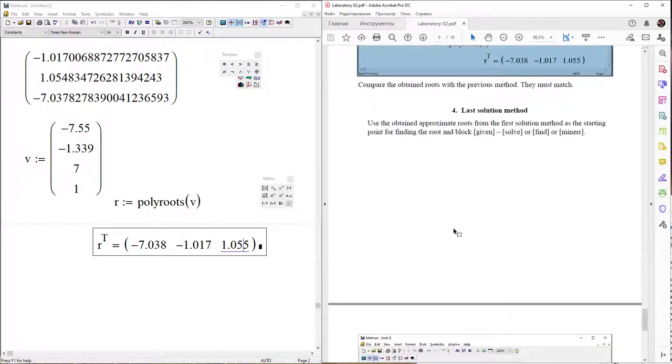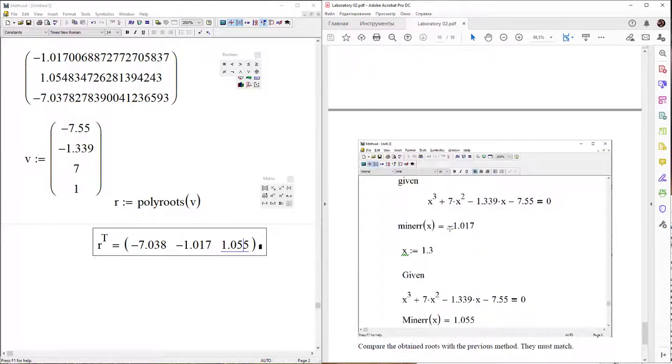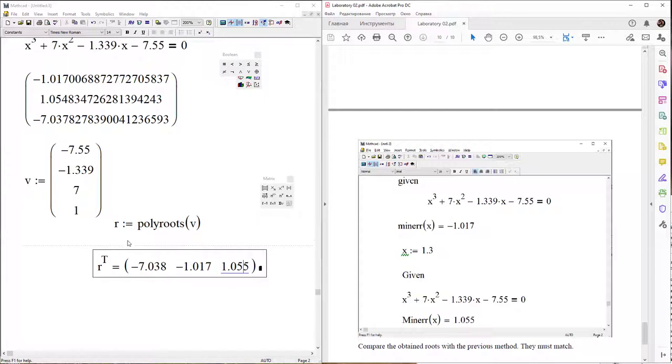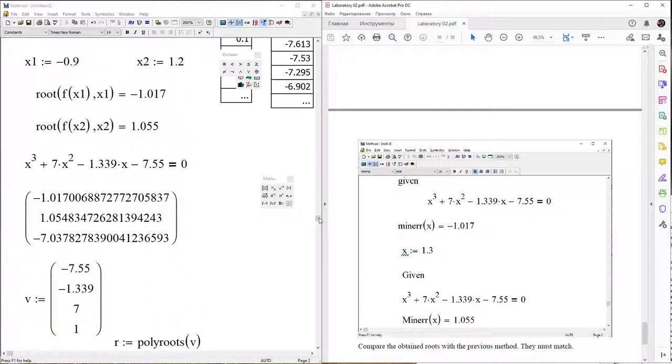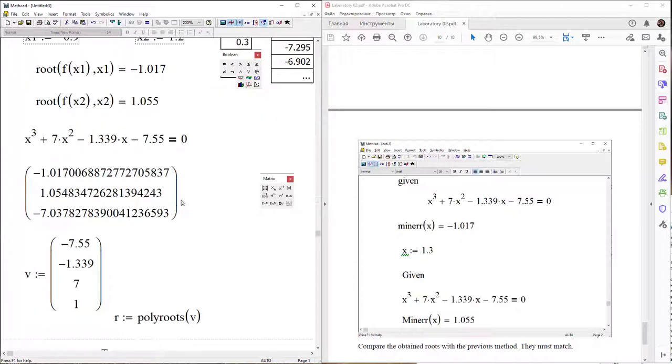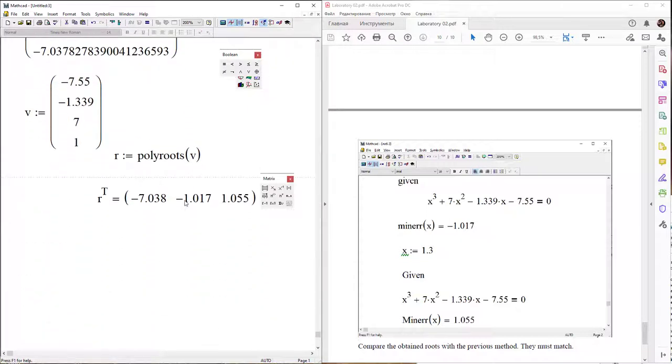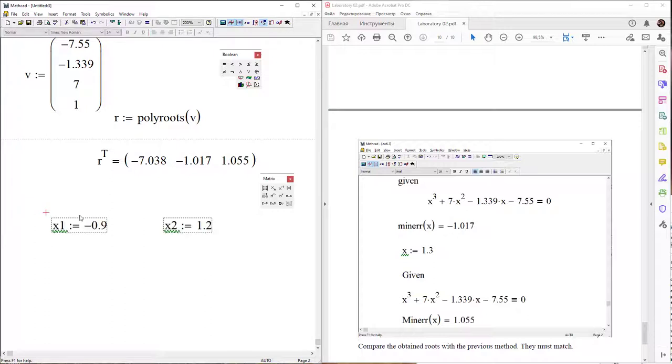Next, the last solution method is using the block given solve, given find, given miner. We have three roots, for example we can use this root minus 1. Response to this problem, then type the iterator of given.